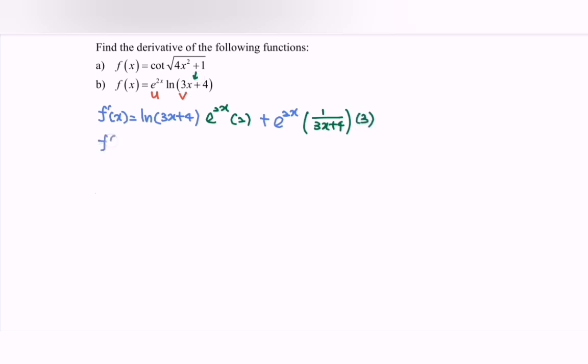Rewrite the situation: f'(x) is equal to 2 exponent 2x ln(3x + 4), plus 3 exponent 2x over (3x + 4).